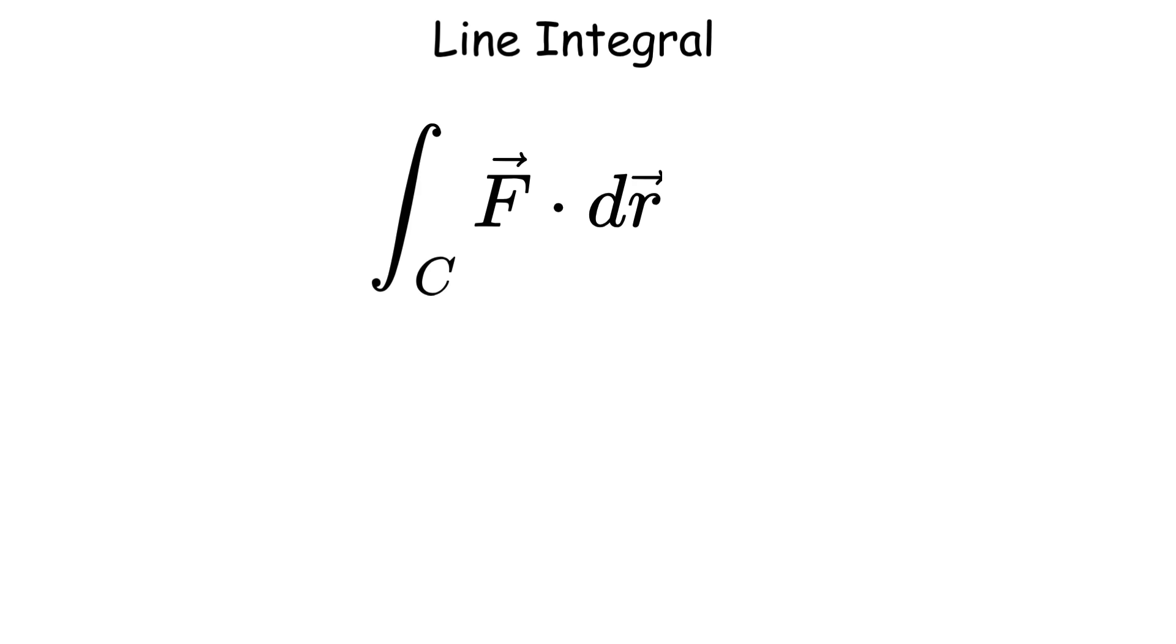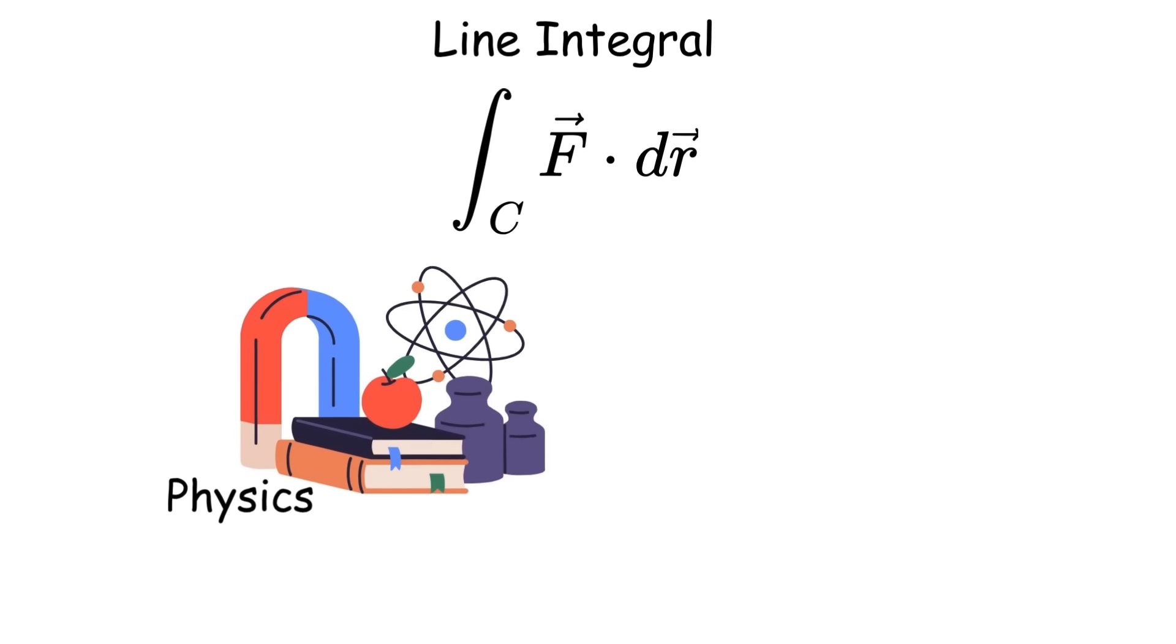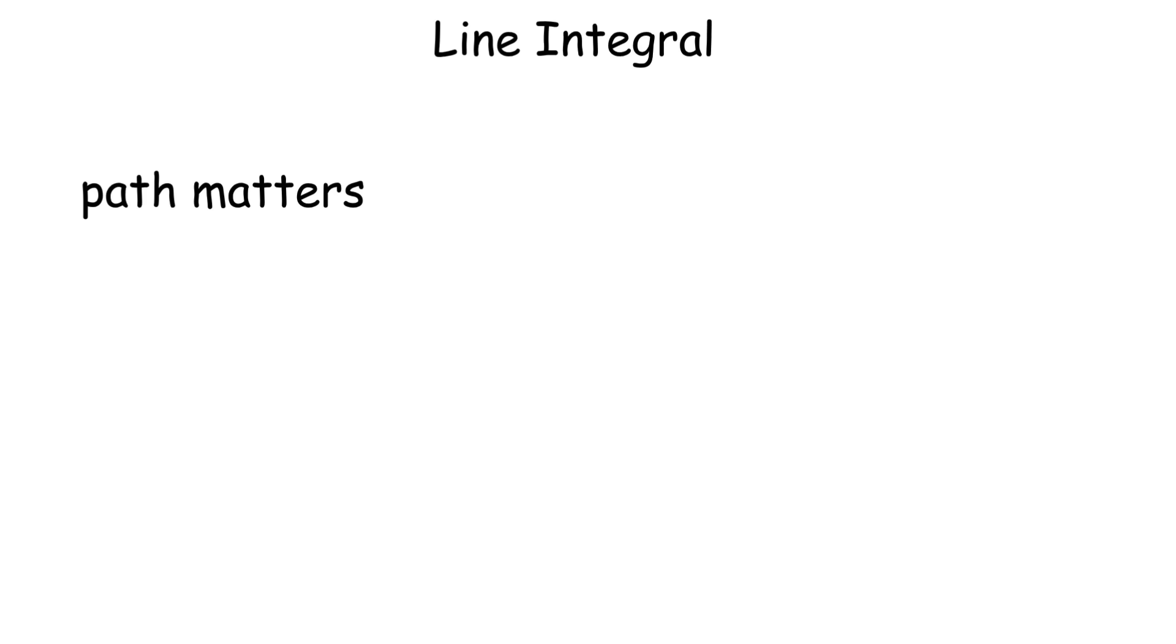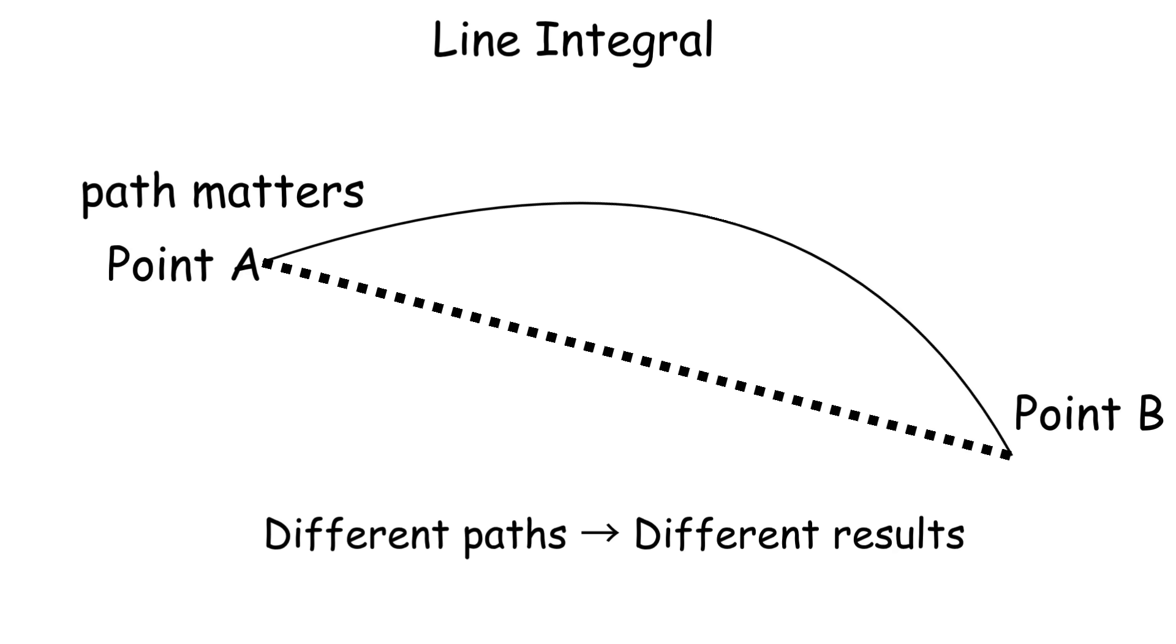So the integral of f dot dr over c, where c is your curve and f is a vector field. This shows up everywhere in physics when you're calculating work, circulation, or flux. The key insight is that the path matters. Taking different routes between the same two points can give completely different answers unless you're dealing with conservative vector fields.